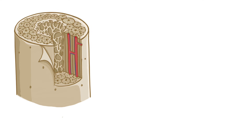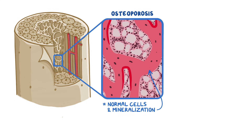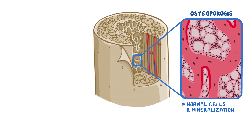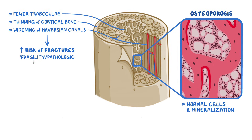When osteoclasts break down bone faster than the osteoblasts can rebuild it, it results in the lowering of bone mass, and eventually osteoporosis. If we zoom into a cross-section of an osteoporotic bone, it will show normal cells with normal mineralization, which differentiates it from osteomalacia, where there's a lack of mineralization. Abnormal findings include fewer trabeculi in the spongy bone, thinning of the cortical bone, and widening of the Haversian canals, which increase the risk of fracture — known as fragility or pathologic fractures.